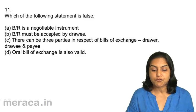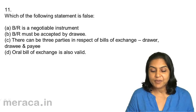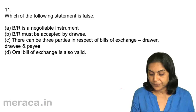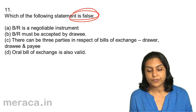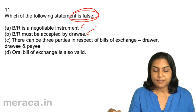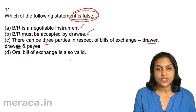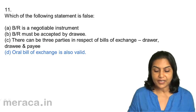Question 11: Which of the following statements is false? A. Bills receivable is a negotiable instrument. B. Bills receivable must be accepted by drawee. C. There can be three parties in respect of bills of exchange — drawer, drawee, and payee. D. Oral bill of exchange is also valid. Bills receivable is a negotiable instrument — true. It must be accepted by the drawee — yes. Three parties — true. Oral bill of exchange is valid — no. So 11D is false; therefore 11D is the correct answer.